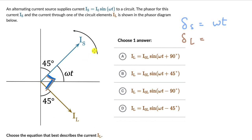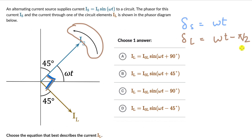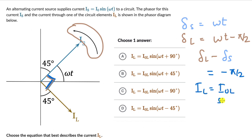We also see that the phasors are rotating in an anticlockwise manner, as shown by the arrow. So Il is lagging behind Is, meaning the phase of Il is omega t minus pi by 2. If we compute delta L minus delta S, the phase difference comes out to be minus pi by 2. So we can write Il as I_L sine(omega t minus pi by 2). That is option C.